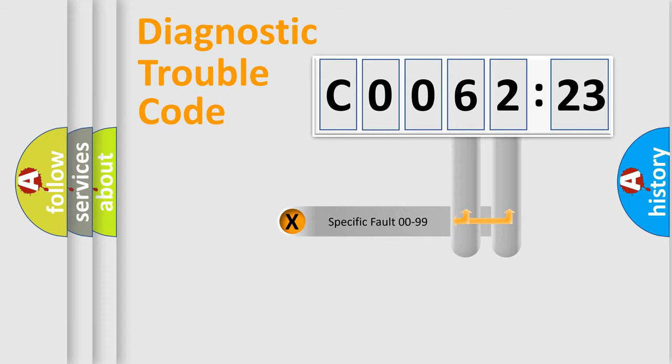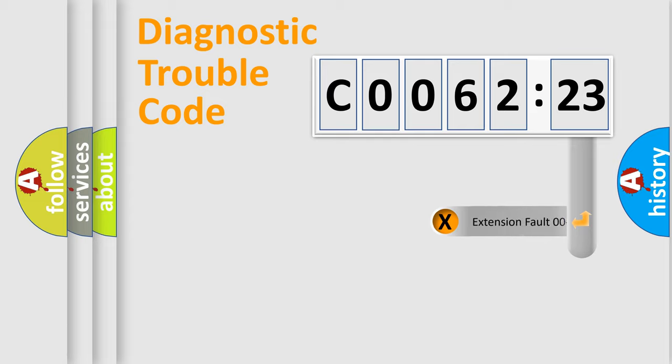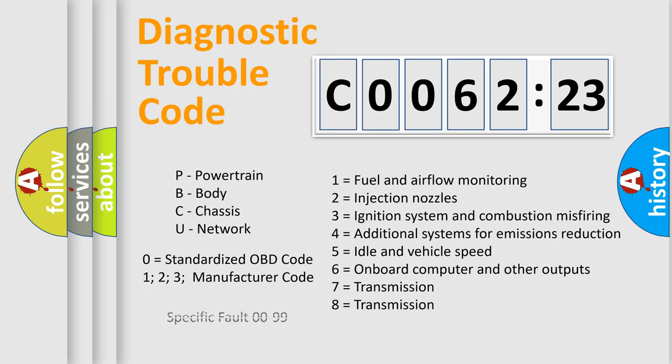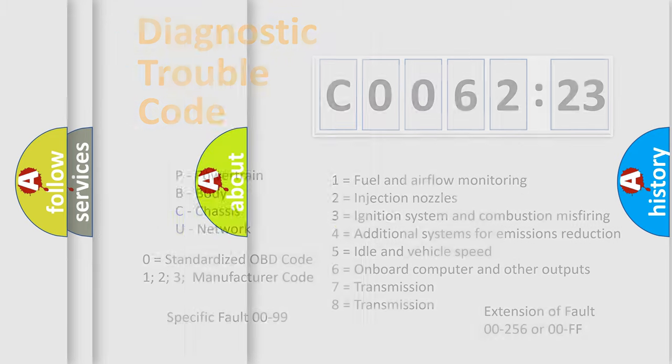Only the last two characters define the specific fault of the group. The add-on to the error code serves to specify the status in more detail. For example, a short to the ground. Let's not forget that such a division is valid only if the other character code is expressed by the number zero.